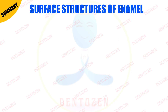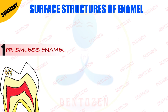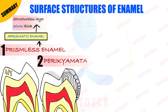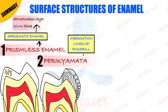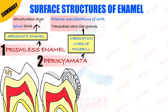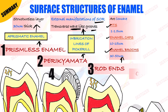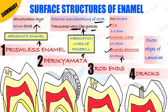Summary of surface structures of enamel: First, prismless enamel — also known as aprismatic enamel — is a structureless layer 30 micrometers thick. Second, perichymata — also known as imbrication lines of Pickerill — are external manifestations of the striae of Retzius, appearing as transverse wave-like grooves. Third, rod ends appear as concave areas; ultrastructurally the surface shows pits, enamel caps, and enamel brocks. Fourth, cracks are the outer edges of enamel lamellae.